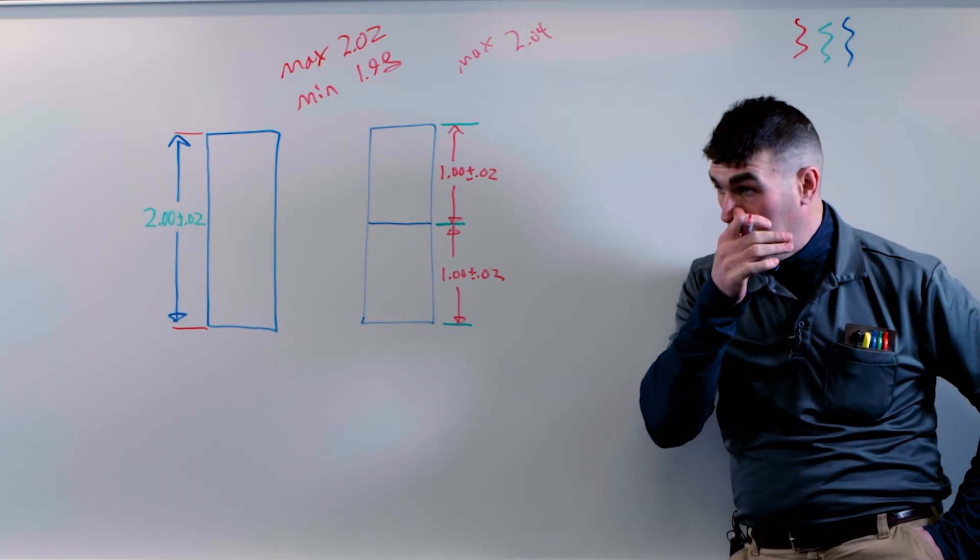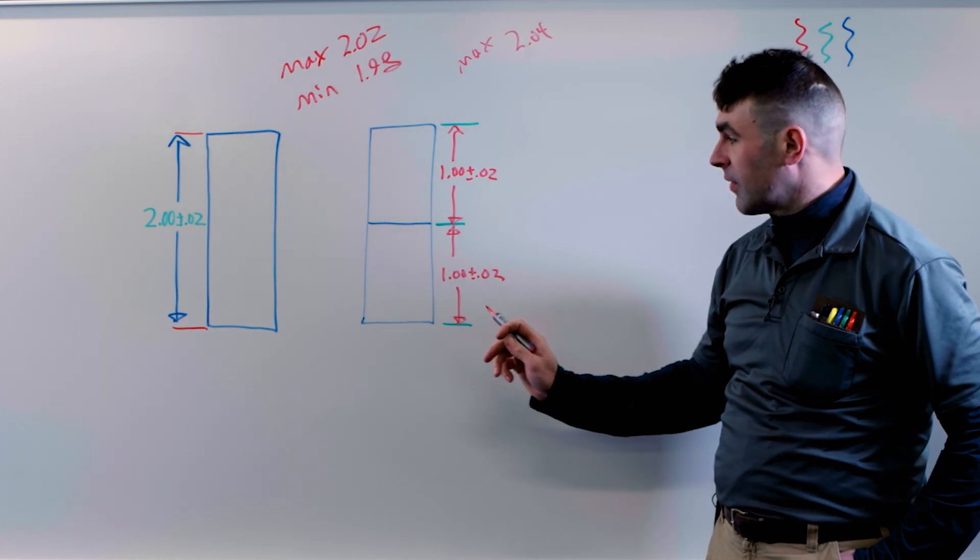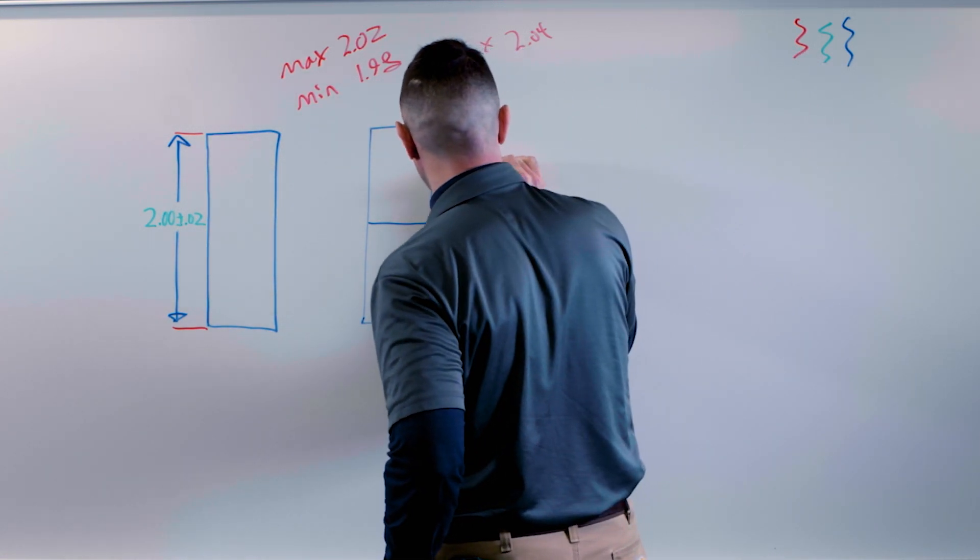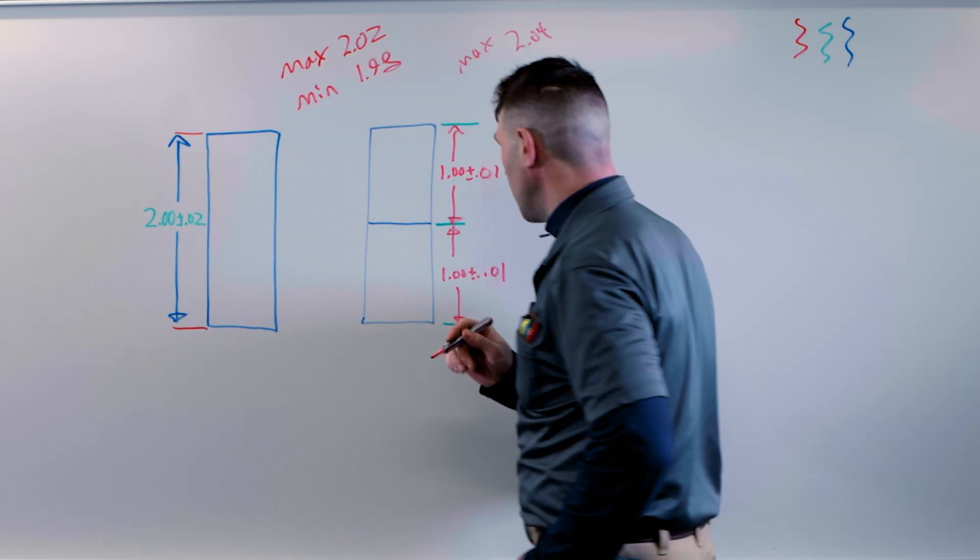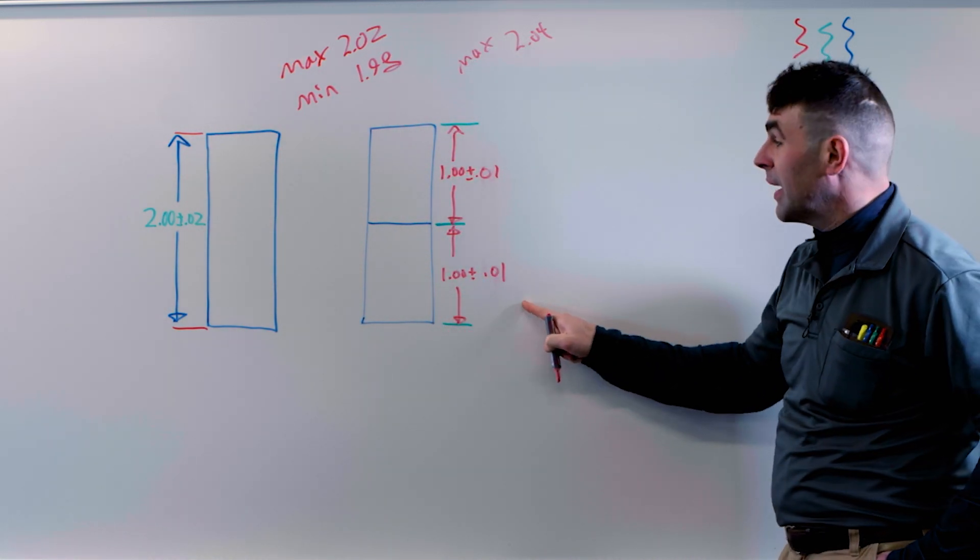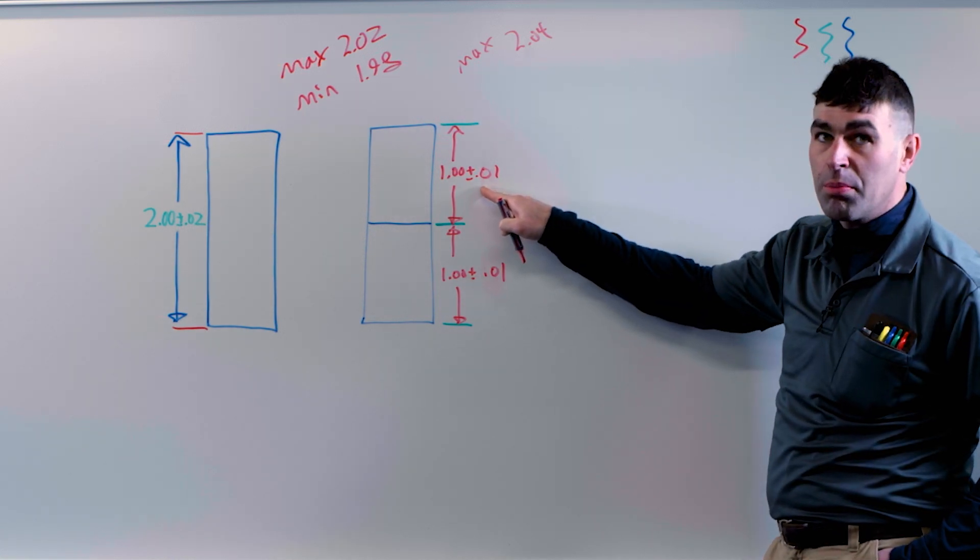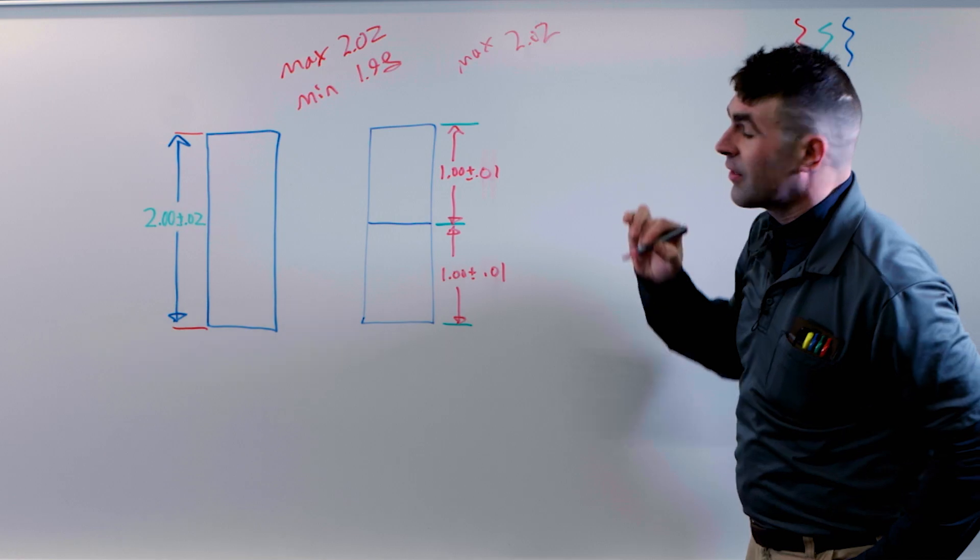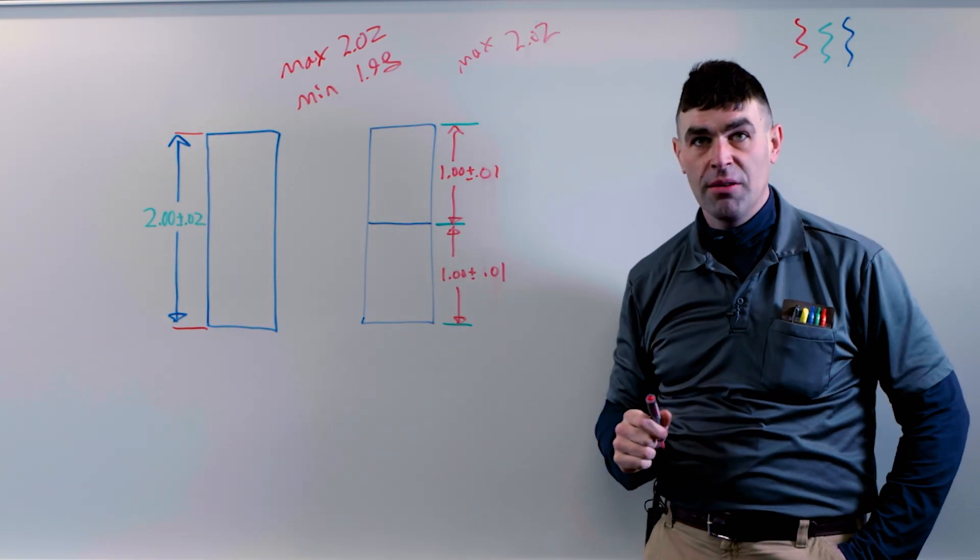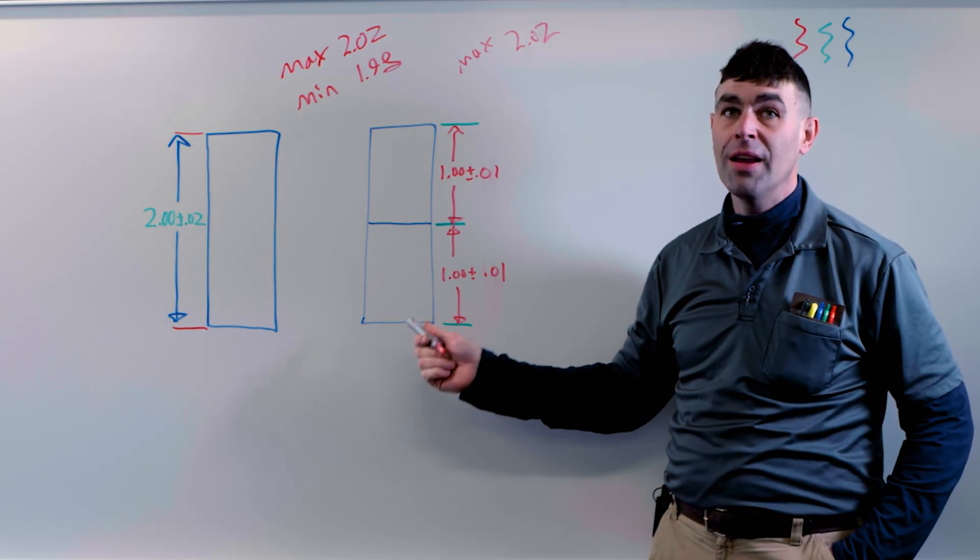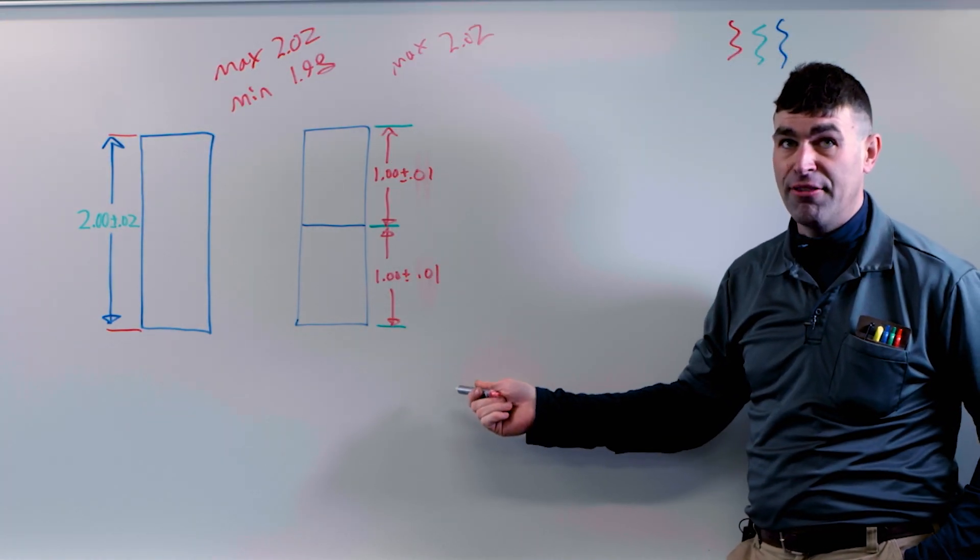So what we have to do, if we go from one part to two parts is cut the tolerance on each part in half. So if we cut this in half, 1.01 plus 1.01 is going to give us our previous maximum. So by going from one part to two parts, we've cut the tolerance on each part in half.